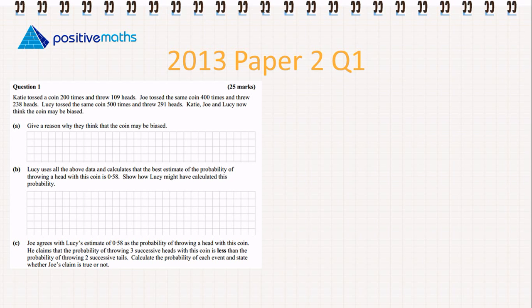Let's read through the question. Katie tossed a coin 200 times and threw 109 heads. Joe tossed the same coin 400 times and threw 238 heads. Lucy tossed the same coin 500 times and threw 291 heads. Katie, Joe and Lucy now think the coin may be biased.